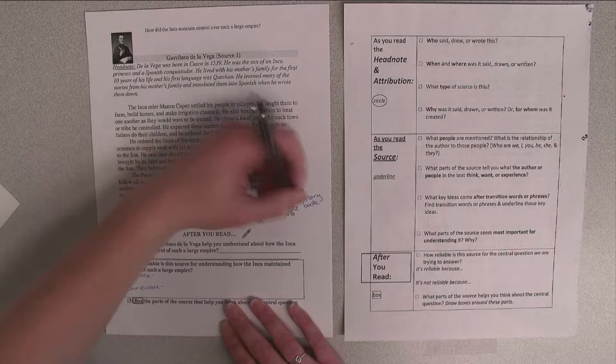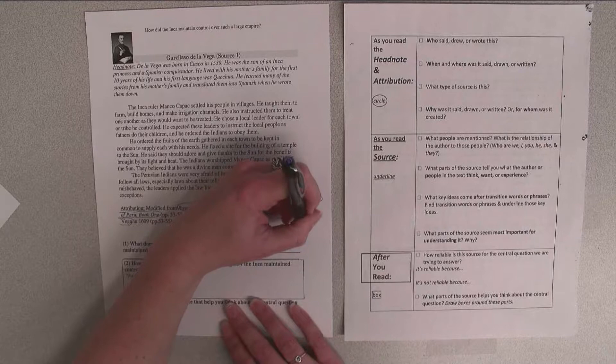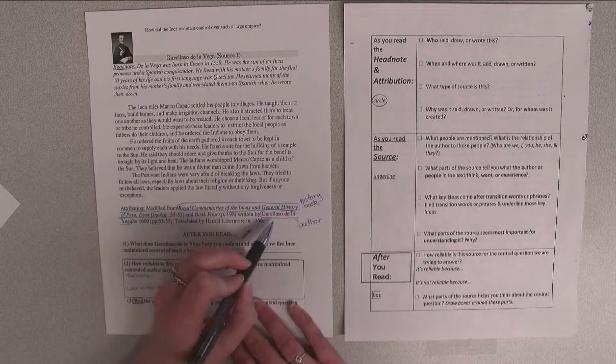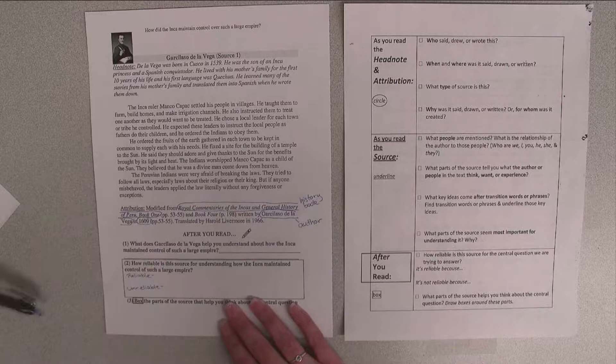And Book 4, written by Garcilaso de la Vega. So I'm going to circle this name because I know this is the author of these stories and commentaries of the Inca. So I'm assuming he's an Inca but I'm going to check that when I get to my headnote.